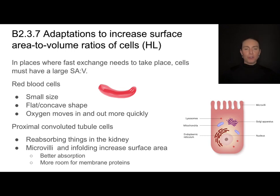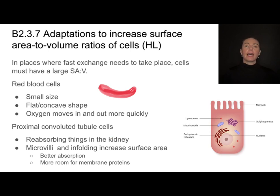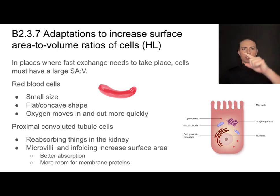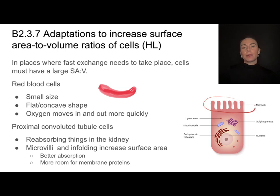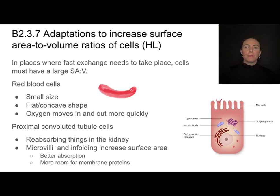The proximal convoluted tubule cells are found in the nephron of the kidney, and what we need to know is that they have to be very good at absorbing things. Absorbing things means you need membrane space, but also membrane proteins like channel proteins and protein pumps, which are embedded in the membrane. So they have little protrusions called microvilli. Microvilli increase the surface area for absorption, and that membrane contains all the proteins necessary for transport of things like ions and glucose — great adaptations to increase that surface area to volume ratio.